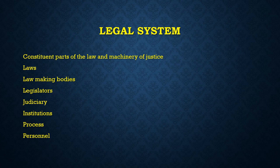What do we mean when we talk about a legal system? The legal system constitutes all of the constituent parts of the law and the surrounding machinery of justice. So it comprises of laws produced by lawmaking bodies — parliaments, legislatures, judiciary — and it also includes the institutions, processes, and the personnel contributing to the operation and enforcement of those laws.